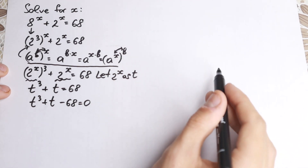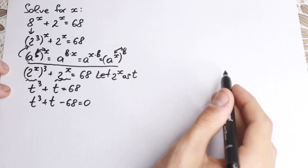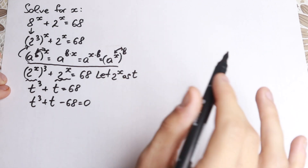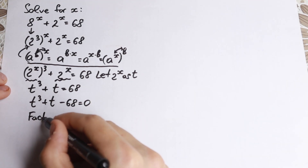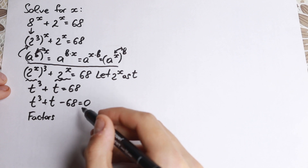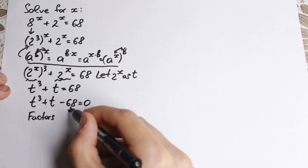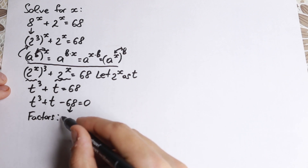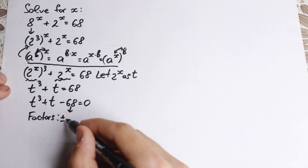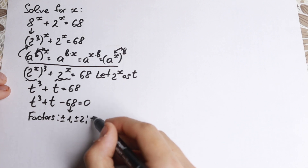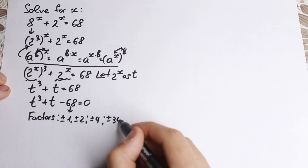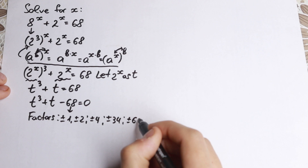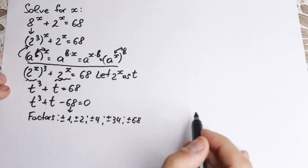There are a lot of approaches to solve it, but I want to show you my real quick approach — though of course you can solve it in your own way. First of all, I'll find real quick factors of 68. So the factors are: plus or minus 1, plus or minus 2, plus or minus 4, plus or minus 34, and plus or minus 68.